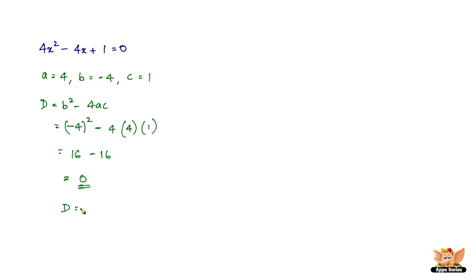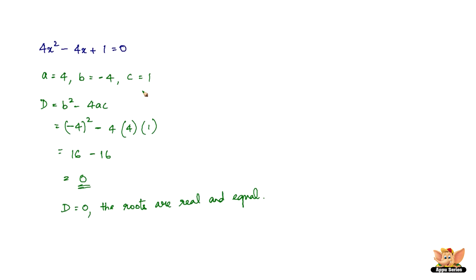Since the discriminant D equals 0, the roots of the equation 4x squared minus 4x plus 1 are real and equal. So the nature of the roots of the equation 4x squared minus 4x plus 1 equal to 0 are real and equal. This ends this video — I'll see you in the next videos with more problems based on the nature of the roots of quadratic equations.